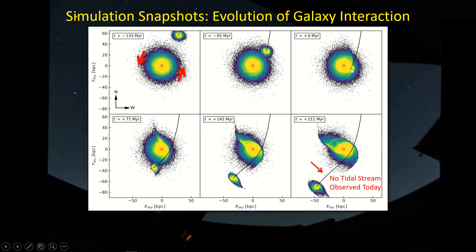At T equals zero — the point of closest approach between the two galaxies — 5474 is passing through right here. Going forward to positive 71 million years after the closest approach, you can see that impact point has rotated because M101 is continuing to rotate. At 143 million years, it's rotated further over, and finally, where we see it today, you can see some of the features emerging that we do in fact see when we take a picture — the dog-leg spiral arm, that deformed spiral arm.